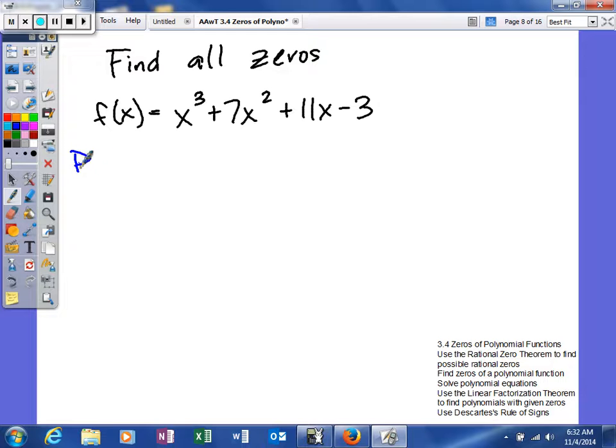Again, what we're going to do is we're going to find our possible rational zeros. And we're going to do that by the factors of our constant, or the factors of our leading coefficient. So we're going to get plus or minus 1, and plus or minus 3.